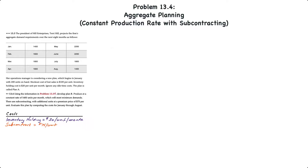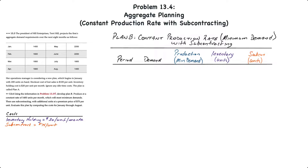We'll create a table with only five columns. The first has the period, the second demand, the third column in blue identifies what the production will be, the fourth column will identify how many units in ending inventory, and the fifth column in orange will identify how many subcontract units are required.